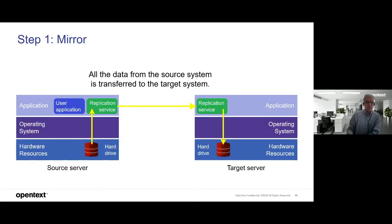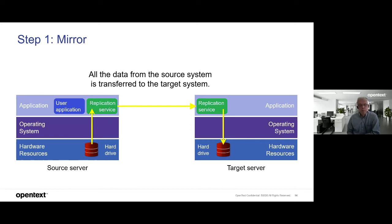In our Carbonite environment, what we do at the first step when we set up a target server is a first full replication. That means we look into our resources — operating system, applications, and so on. We have a replication service installed on both the source and target machines. We do a full copy of the server if you want. If you only want to copy the database and the file system of the users, that's fine too. But if you want to clone your machine, you can use Carbonite to create a one-to-one clone of the existing machine.